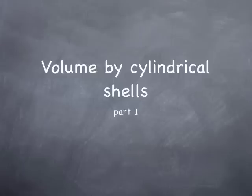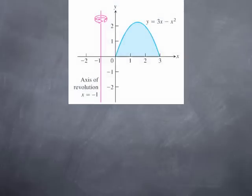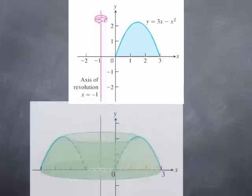Now we're going to look at an alternative method to calculate volume of solids of revolution. To start with, let's take a look at why we would want an alternative method. Let's say we're trying to rotate the region below the graph of y equals 3x minus x squared and above the x-axis. We rotate it about the line x equals negative 1, and we obtain a solid of revolution. Let's look at what it would take to use the previous method in this case.